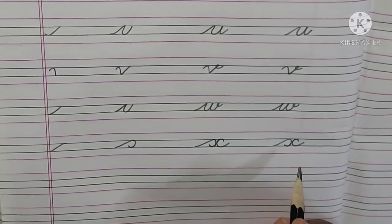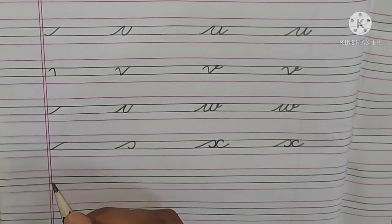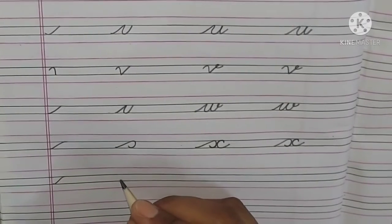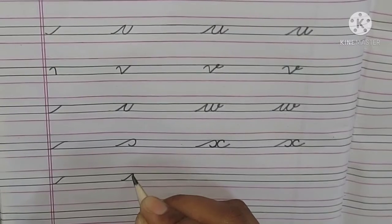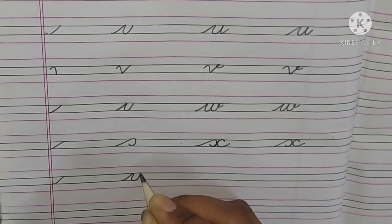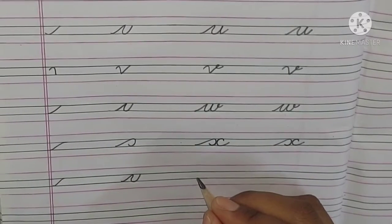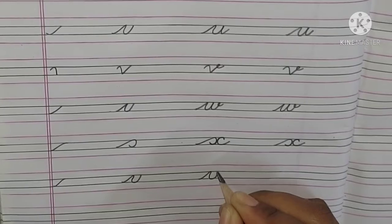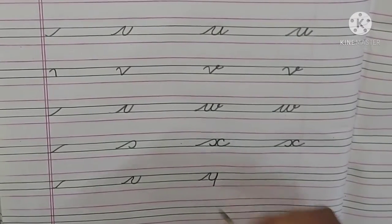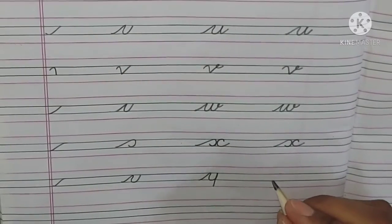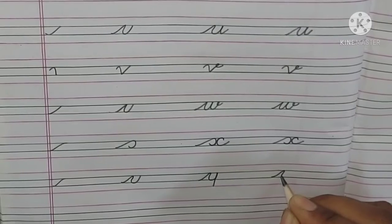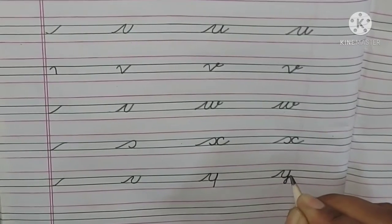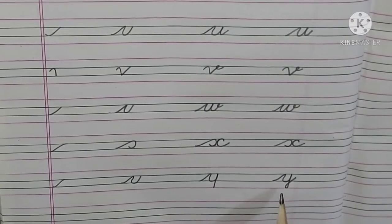After X, what comes? Letter Y. For Y, we also start from the third line. From the third line to the second line like this, then again from the third line to the second line, then make a curve. Once again — third line to second line, bring back the curve, then from the third line to the second line again. Then draw a straight line down, then curve it like this. This is your letter Y.